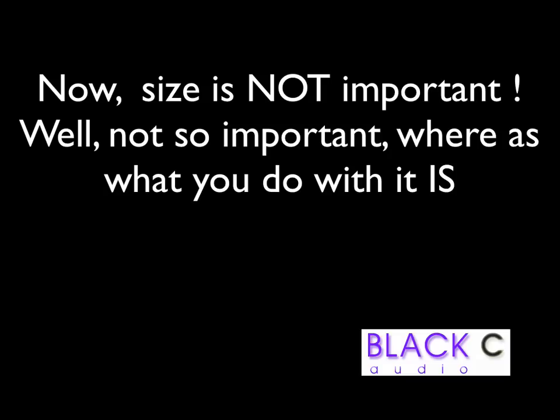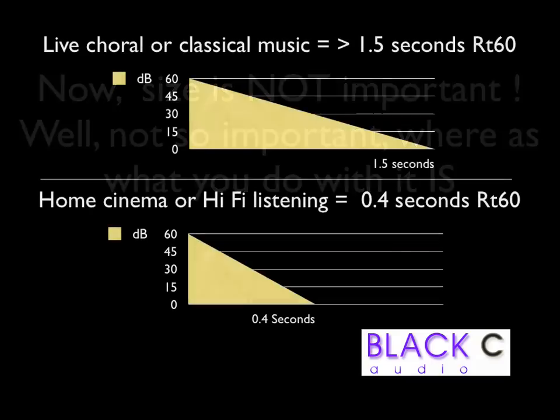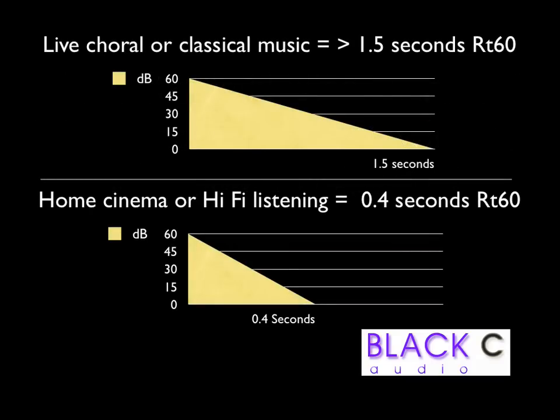So, for example, a room for live classical music would need quite a long reverberation time, even longer for live choral, whereas a classroom, where speech intelligibility is important, would need quite a short reverberation time. Practically, current recommendations would suggest something along the lines of 0.4 seconds for a home cinema, while a concert hall for classical music would need an RT60 of a little greater than 1.5 seconds.